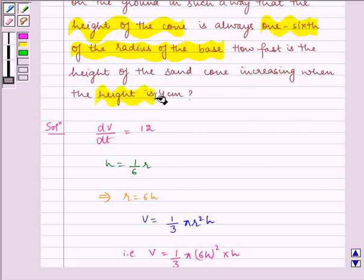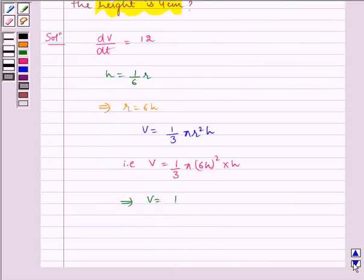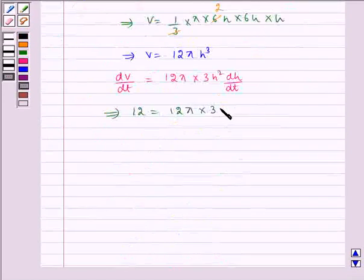Height is 4 centimeter. So 12 = 12π × 3 × 4² × dh/dt.